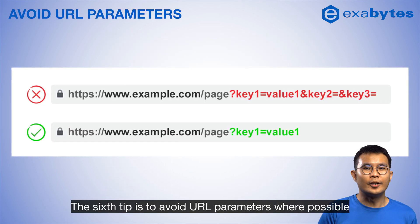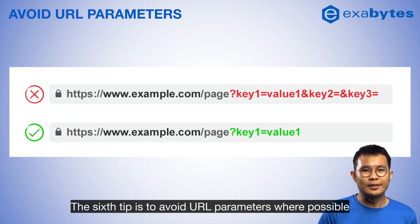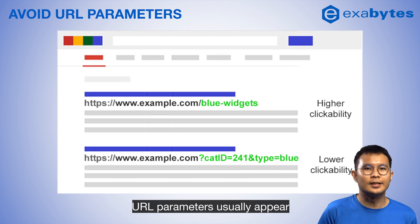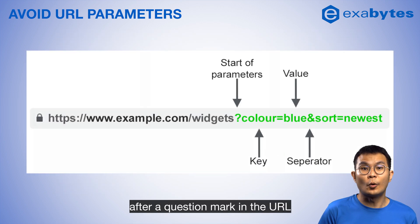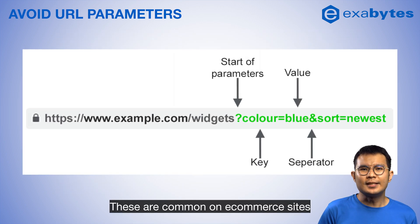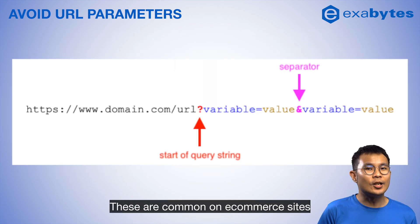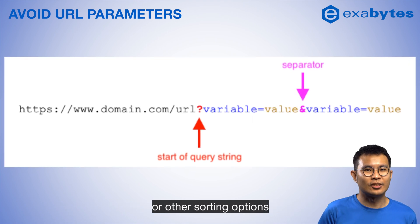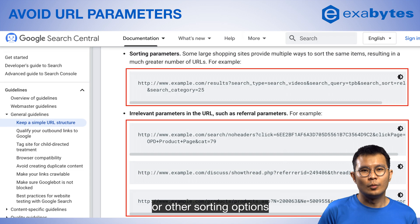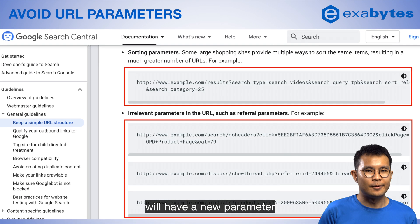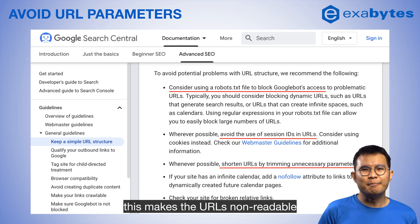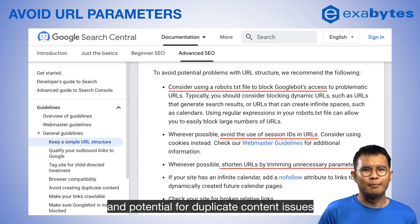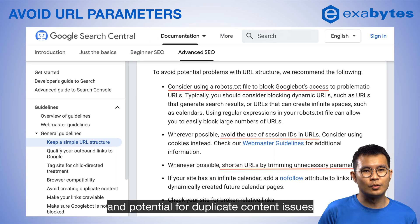The sixth tip is to avoid URL parameters where possible. URL parameters usually appear after a question mark in the URL. These are common on e-commerce sites where different colors or sorting options will generate a new parameter. Eventually, this makes URLs non-readable and creates potential for duplicate content issues.